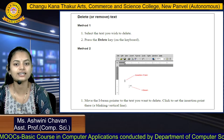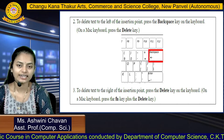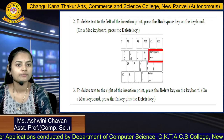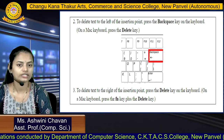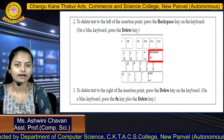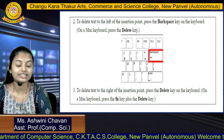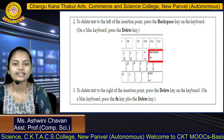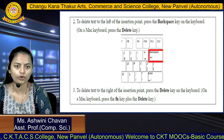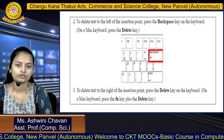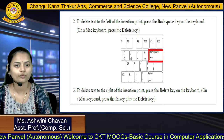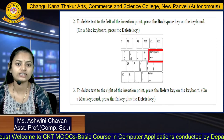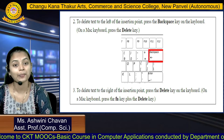To delete text to the left of the insertion point, press the Backspace key on the keyboard. On a Mac keyboard, use the Delete key for deleting that particular text. To delete text to the right of the insertion point, press the Delete key. So: Backspace deletes to the left of the insertion point, and Delete removes to the right.